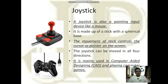Next is joystick. It is very much used in computer games. It looks like a mouse because it is a pointing device. It is made up of a stick with a spherical base. The movement of the stick controls the cursor on a screen, and the joystick can be moved in all four directions.